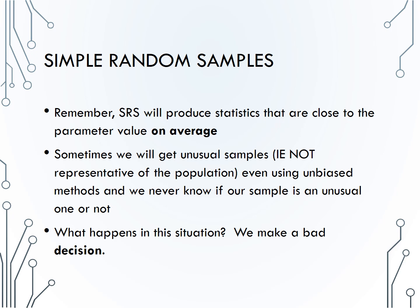Recall from section 2.1 that simple random samples will produce statistics that are, on average, close to the value of the parameter. However, it is possible to get an unusual sample, one that is not representative of the population, even using unbiased sampling methods, and we'll never know if our sample is an unusual one or not. What happens in this situation? We make a bad decision, or what's called an error.